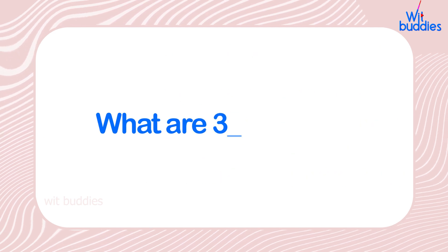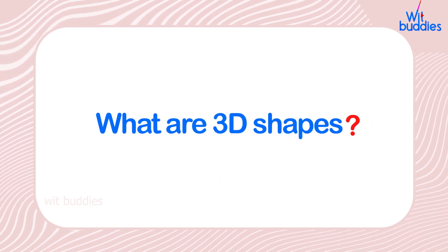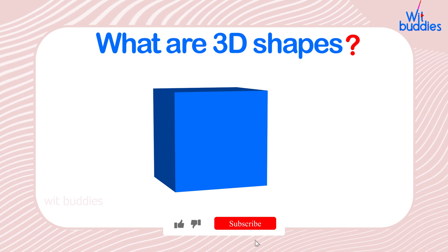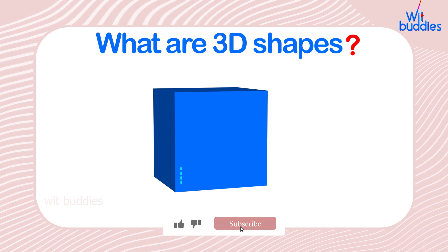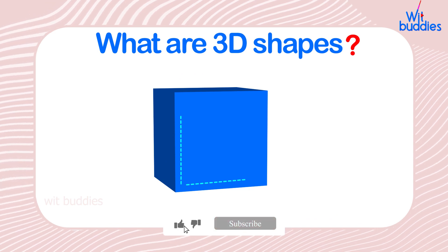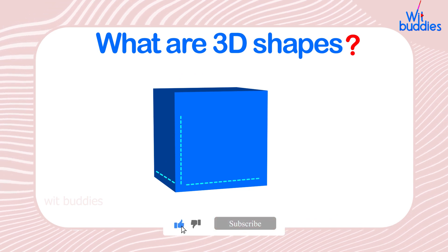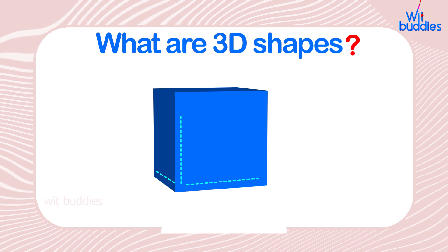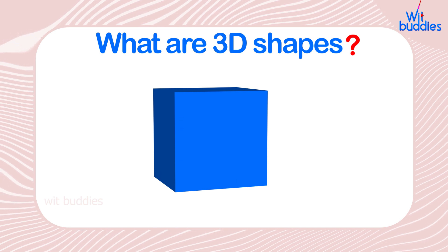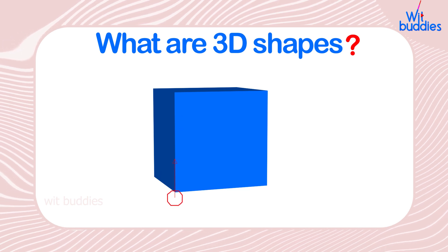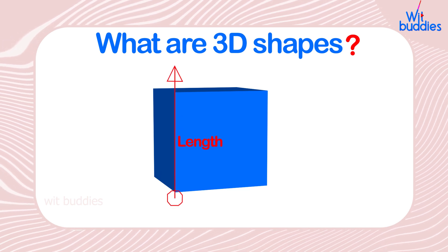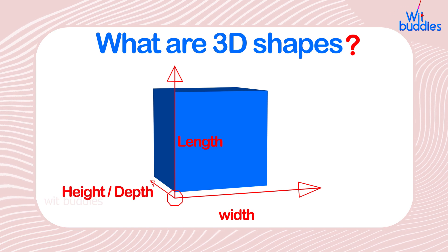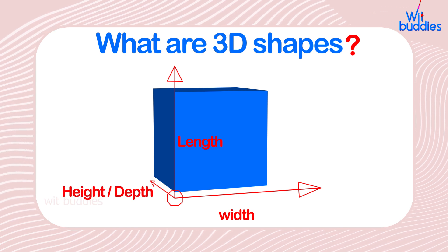What are 3D shapes? 3D shapes are known as three-dimensional shapes. 3D shapes have three different measures such as length, width, and height, or depth, or thickness.